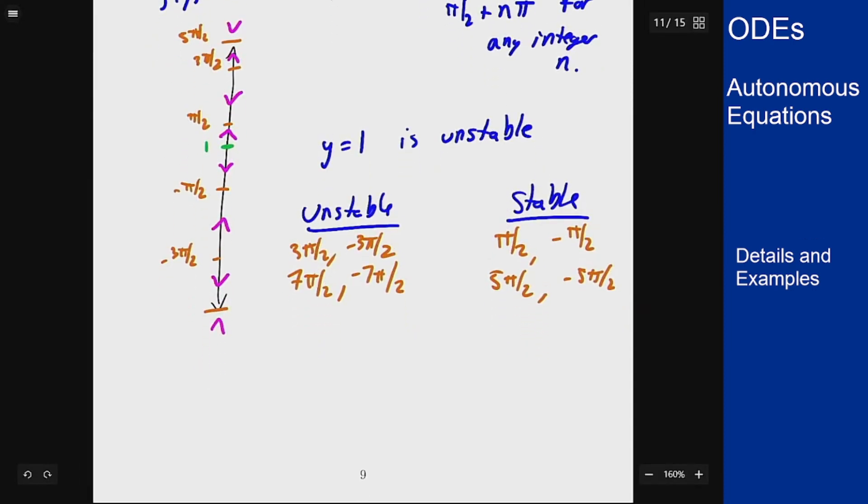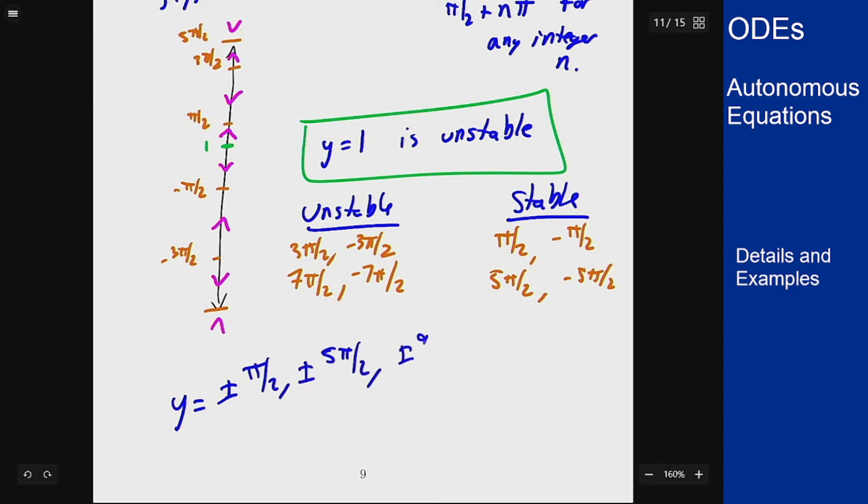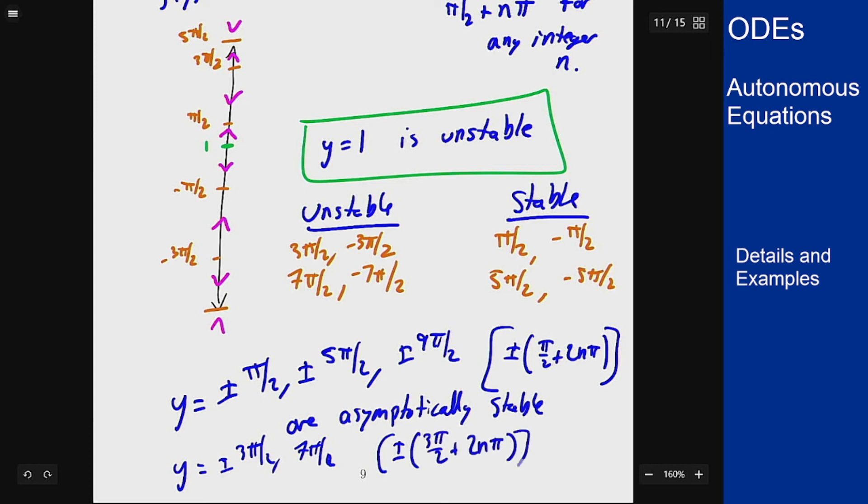So in the end we have y equals 1 is unstable. We have y equals ±π/2, ±5π/2, ±9π/2 and so on. If you want a more closed form, ±π/2 plus 2nπ are asymptotically stable and on the other side 3π/2, 7π/2 or ±3π/2 plus 2nπ are unstable. This is a harder one to write out just because there's an infinite number of solutions here but the idea is the same.